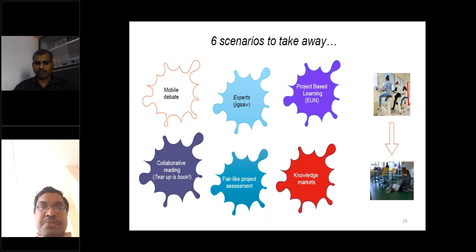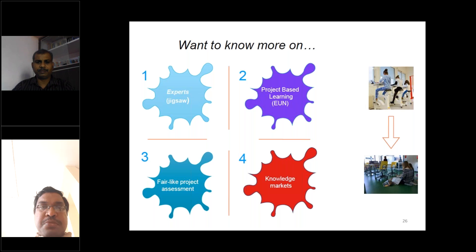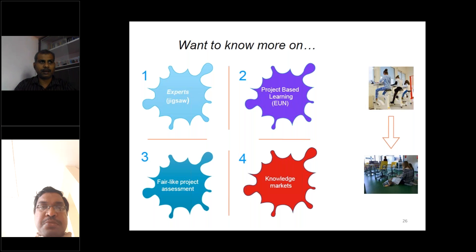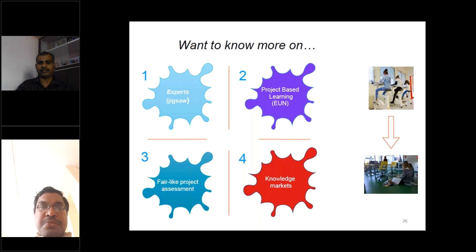For active learning, there are six scenarios: mobile debate, expert jigsaw, project-based learning, knowledge market, fair-like project assessment, and collaborative learning. I want to focus on expert jigsaw, project-based learning, knowledge market, and fair-like project assessment. If you practice these things in your classrooms, you are ready for ICT-based education. If you are ready to practice these four things, you can deliver content in an online forum very easily.